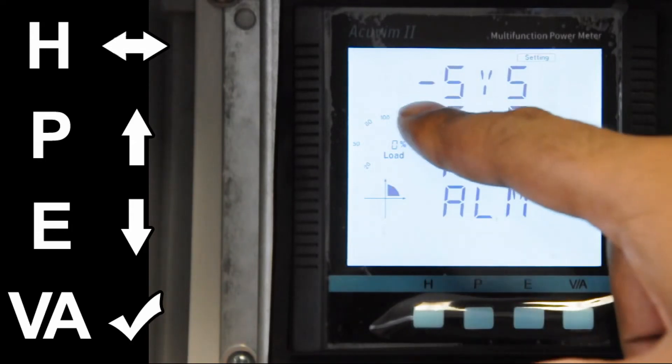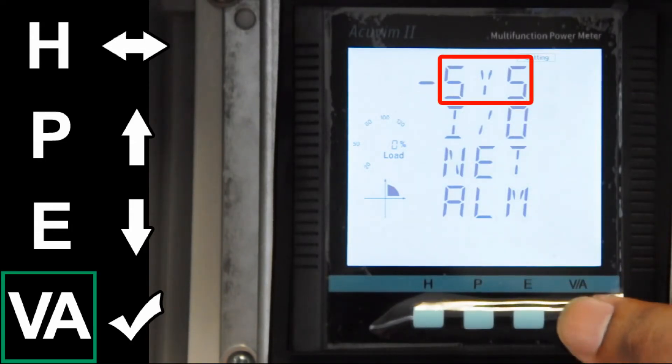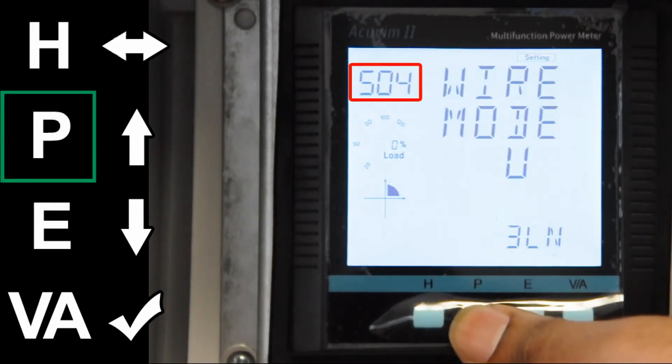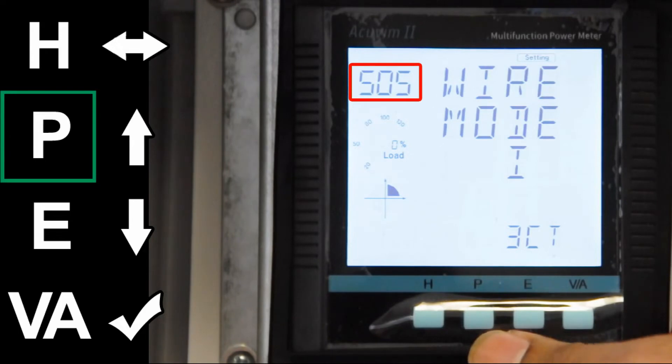You will need to go into the system. Press ENTER, which is VA. Press the P button 5 times to go to the setting point S06, which is where we will configure our first PT.